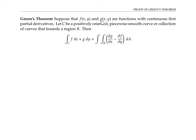Suppose that f and g are functions of two variables with continuous first partial derivatives. Let C be a positively oriented piecewise smooth curve or collection of curves that bounds region R, which I've shaded in light blue. Positively oriented means that if I travel around each of these boundary curves, the region needs to stay on my left. So the outside curve needs to be oriented counterclockwise, but the inner curves need to be oriented clockwise, so that the region still stays on the left as I travel around them.